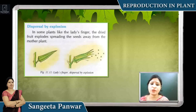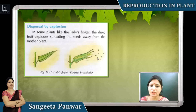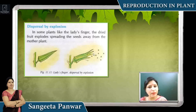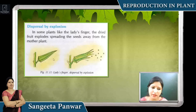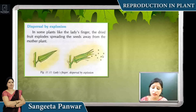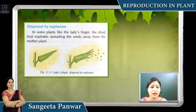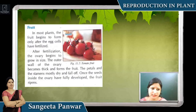Some plants dry out and explode. Because of drying, their seeds scatter and develop into new plants.